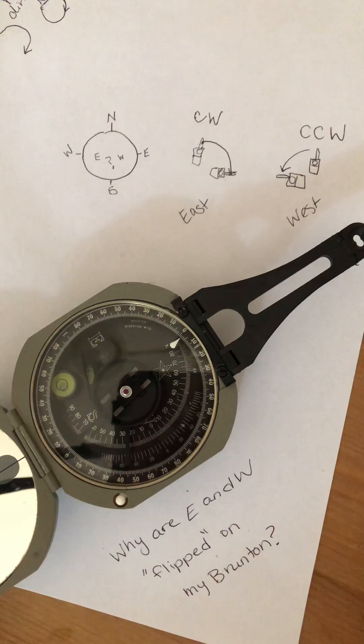We have east and west flipped on a Brunton because the Brunton is telling us the direction that we are pointing in, not the direction that the needle is pointing in. The needle is always pointed north.